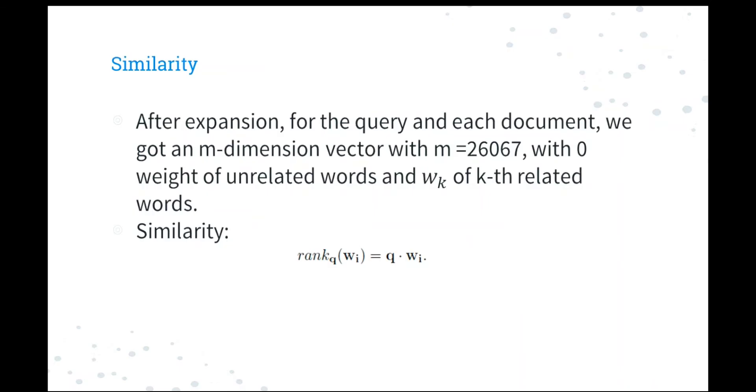After the expansion for the query and each document, we can get an m-dimensional vector with m equals to 26,067, which is the size of our vocabulary, with the weight of unrelated terms and wk of the k-th related term. According to our experiment, we found that the scalar product performs better than the cosine in evaluating the similarity. So we just used the scalar product in our system.